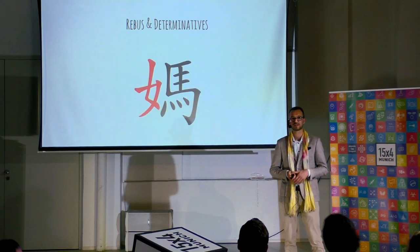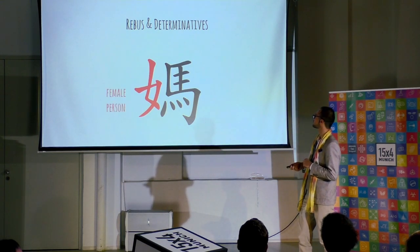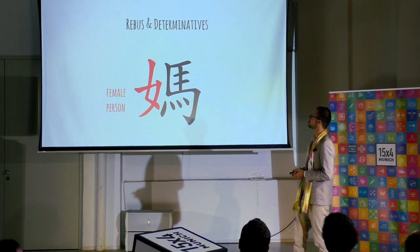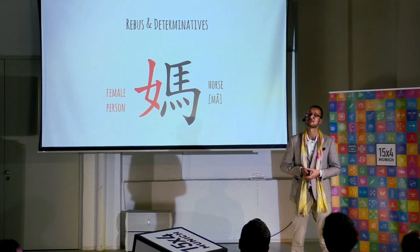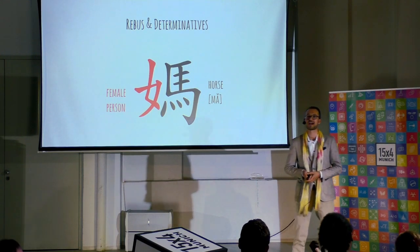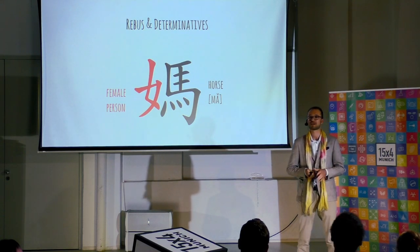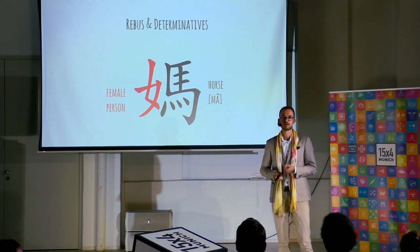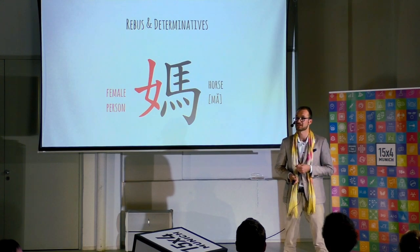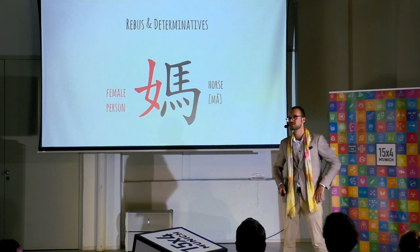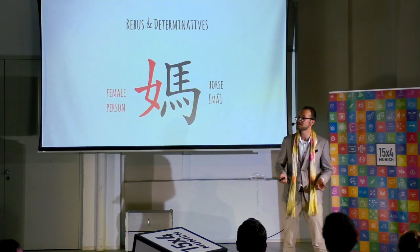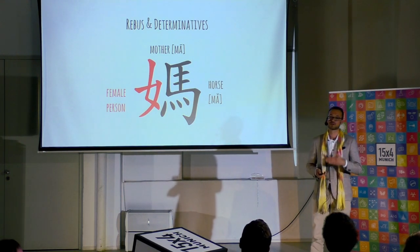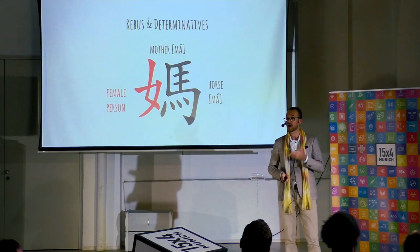Take this sign, for example. It gives you information on two things. The half on the left means 'female person.' The half to the right is the very simplified picture of a horse that we saw on the previous slide — it's pronounced approximately as 'ma.' Generally, what this sign conveys are two things: how it will sound — approximately 'ma' — and what it will mean — a female person. So what is the word for a female person that sounds like 'ma'? Well, it's the Chinese word for 'mother,' which also sounds approximately as 'ma.' And that is how Chinese writing, to the biggest extent, works up to this single day.